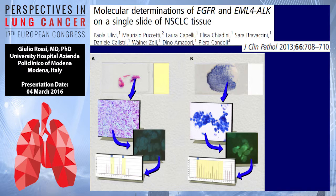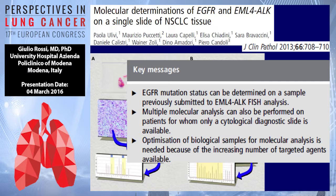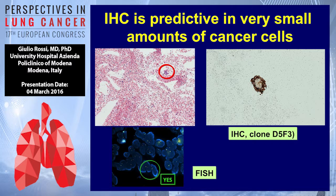Here is a small experience to confirm this point. In this paper, the authors had just one slide and used ALK FISH or ALK immunohistochemistry to determine first ALK rearrangement and then EGFR mutation. Using this stepwise approach with the same slide, they could determine both ALK rearrangement and EGFR mutation. We need to become smarter to determine these predictive factors and optimize the use of the small tissue we have.